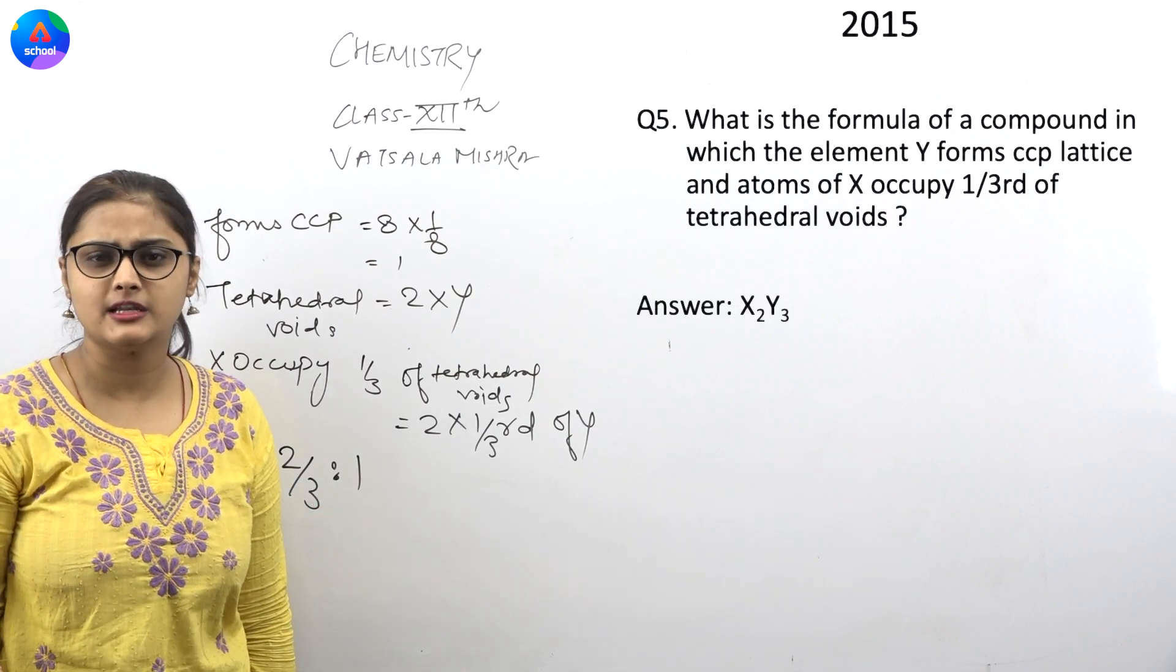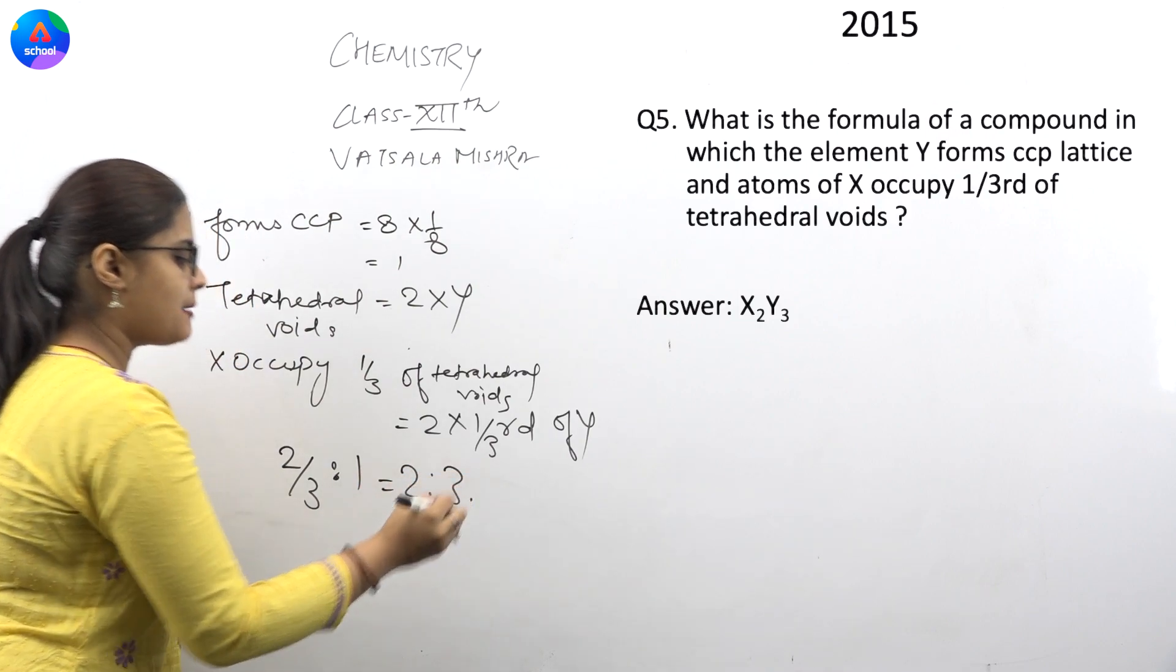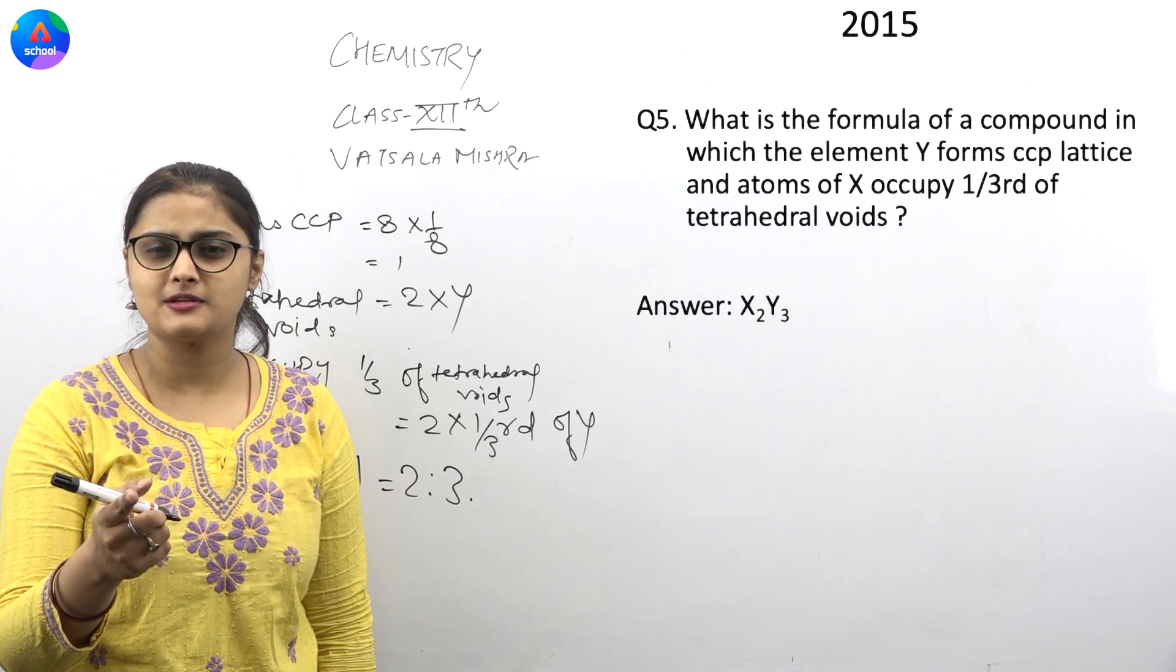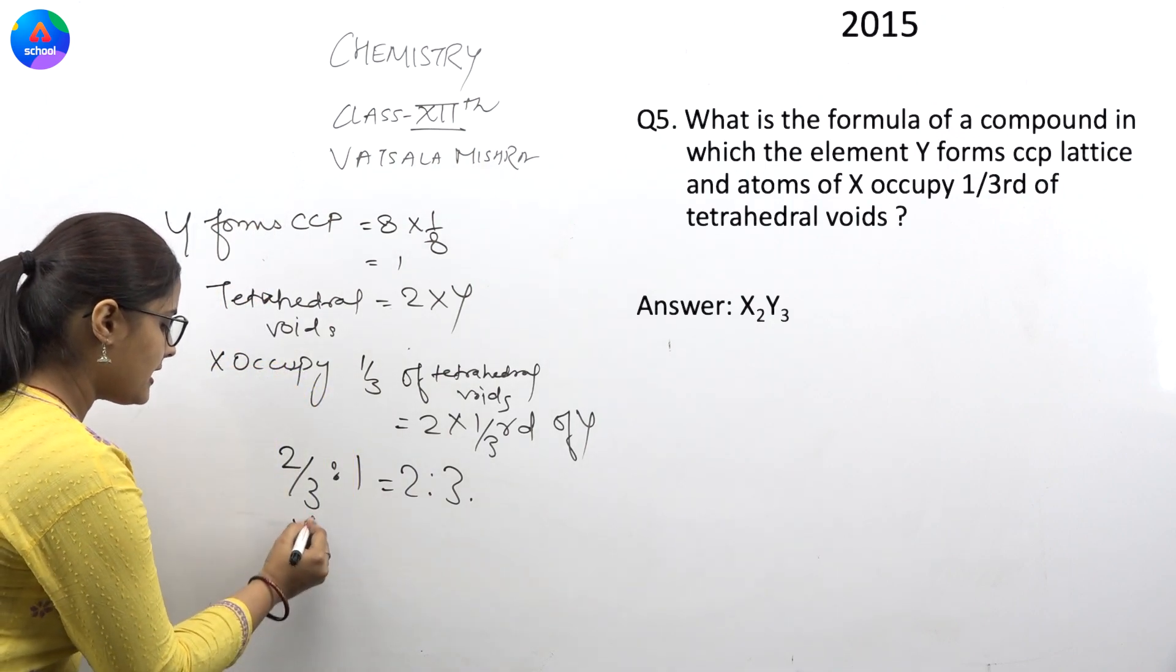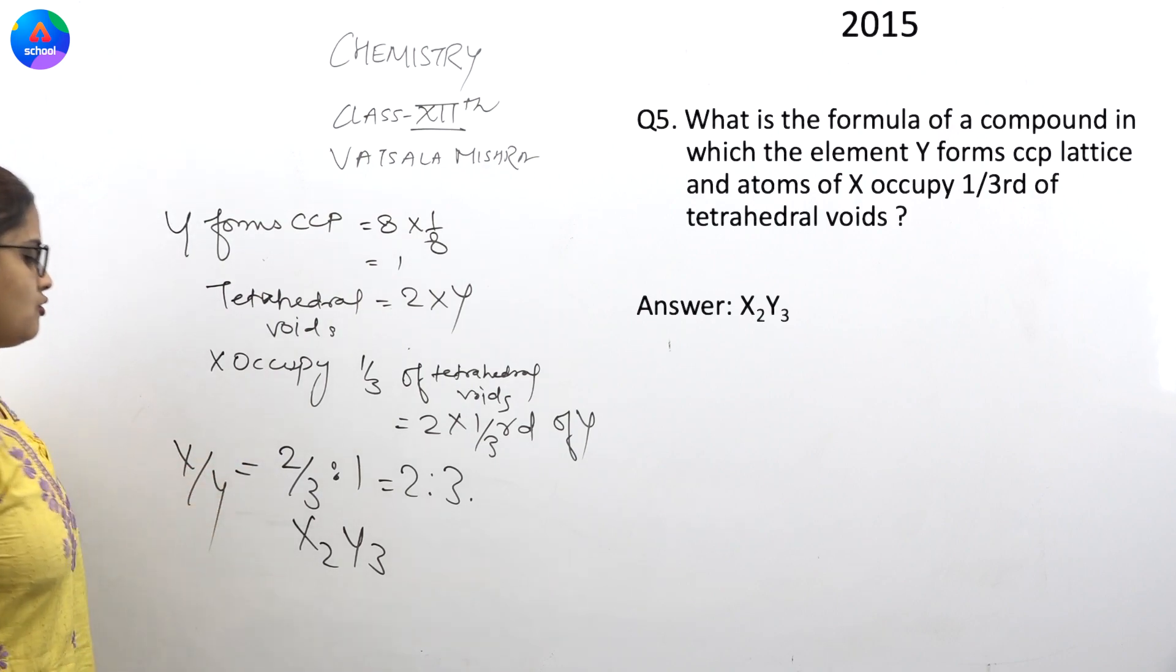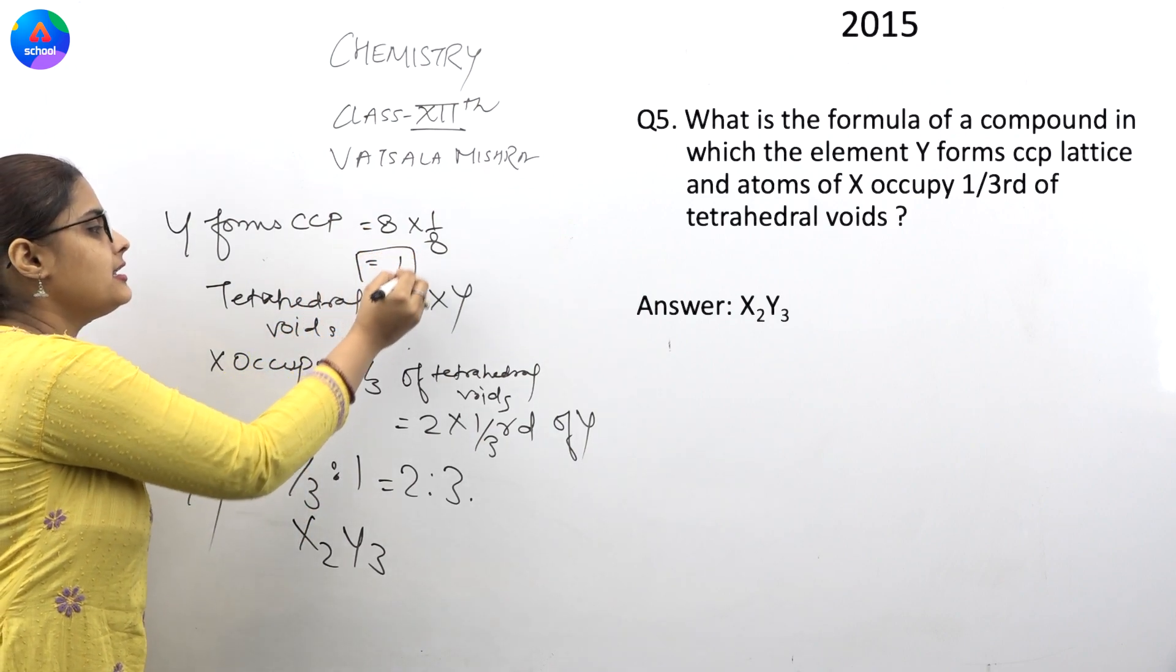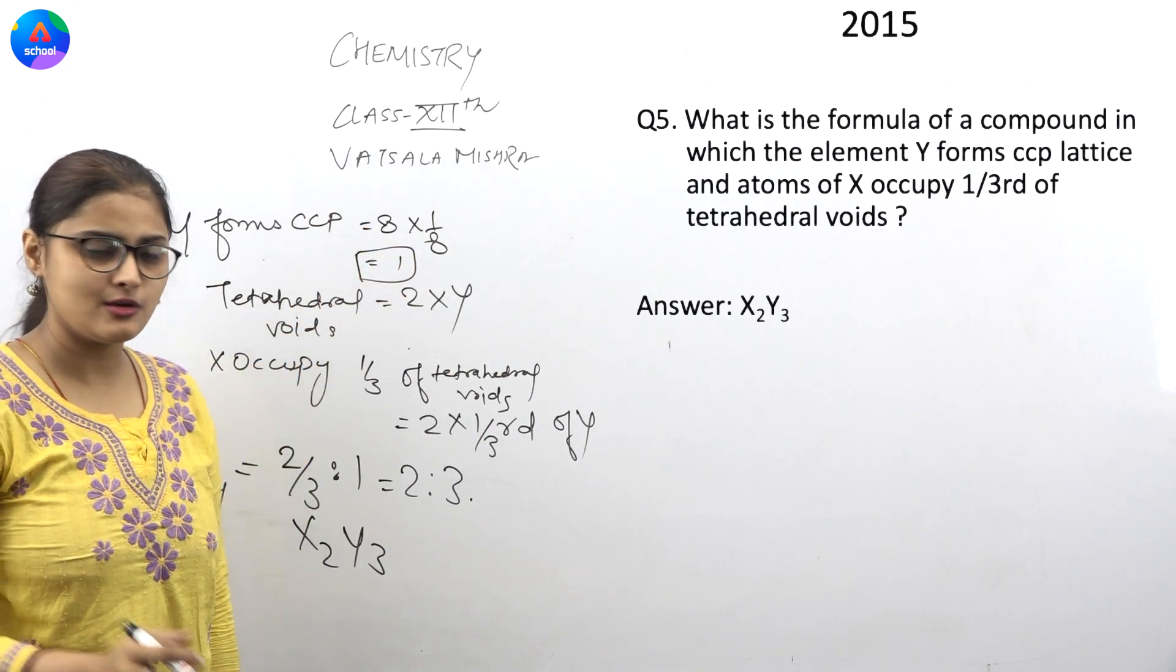The ratio is upon 1. Now, if you take something like this, what does your formula come out? X₂Y₃, I think, will show you the screen, because X, 2, Y, 3 will be like this. X has been 2/3, Y was already 1. There was no change in that.